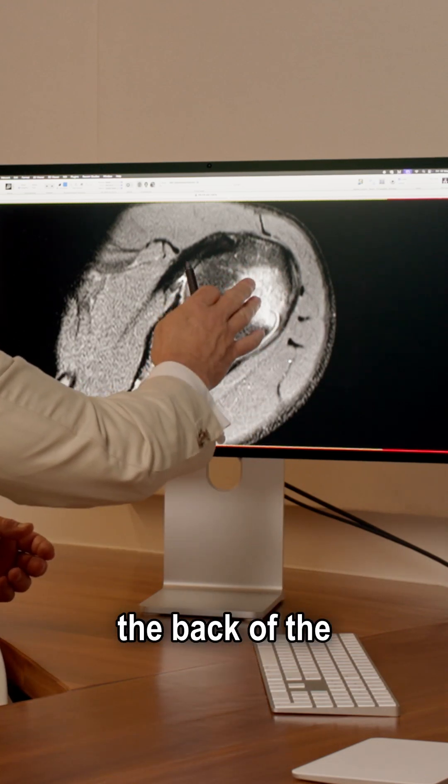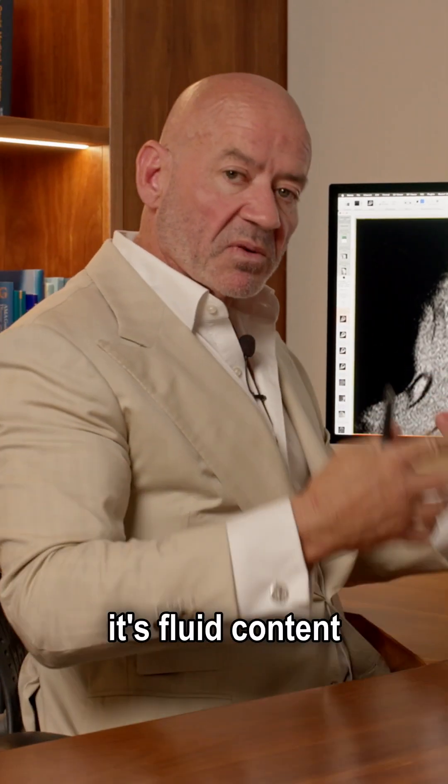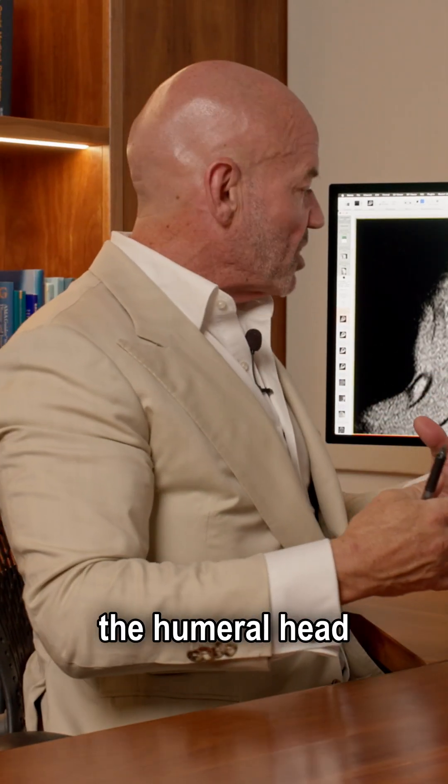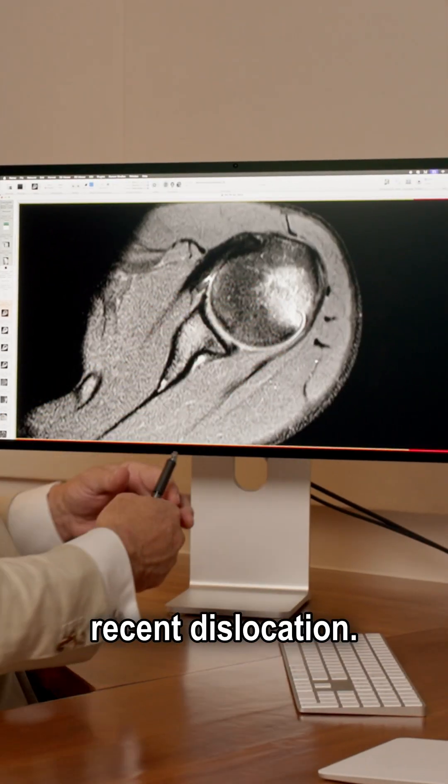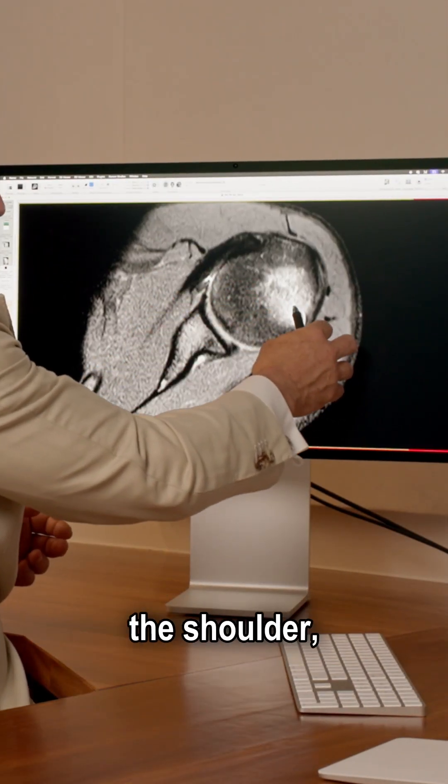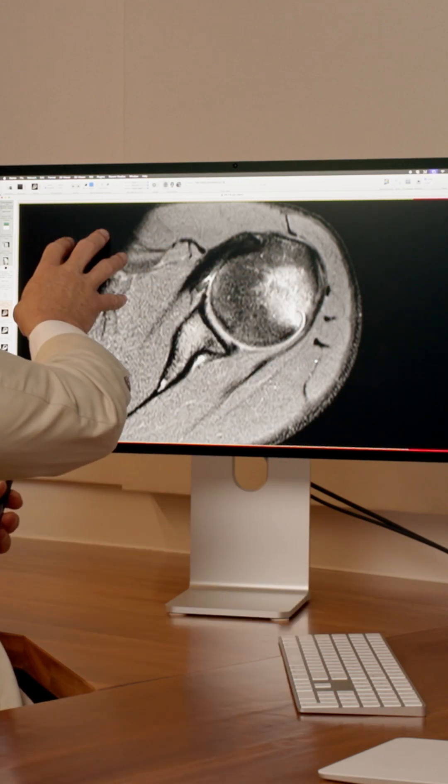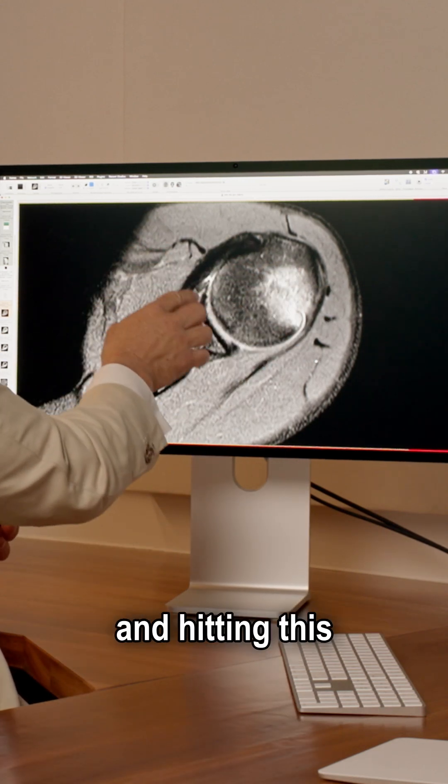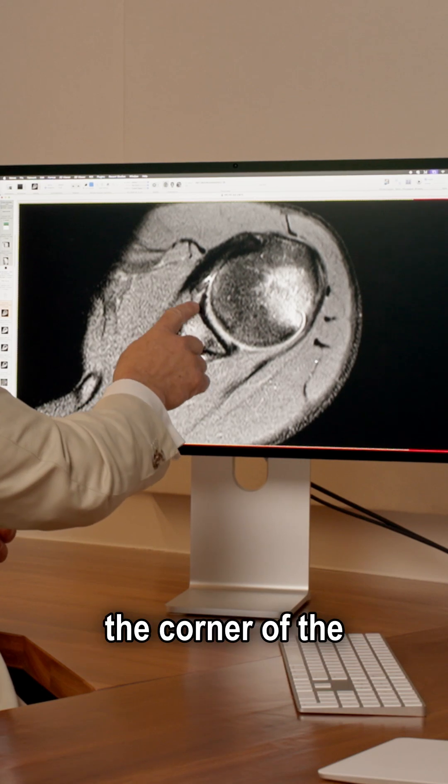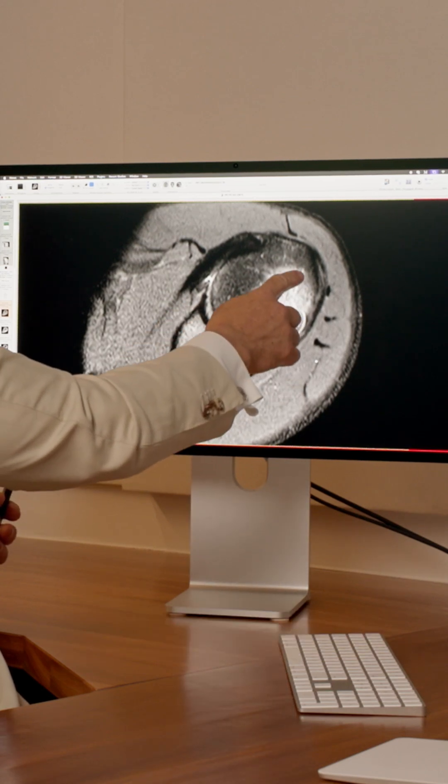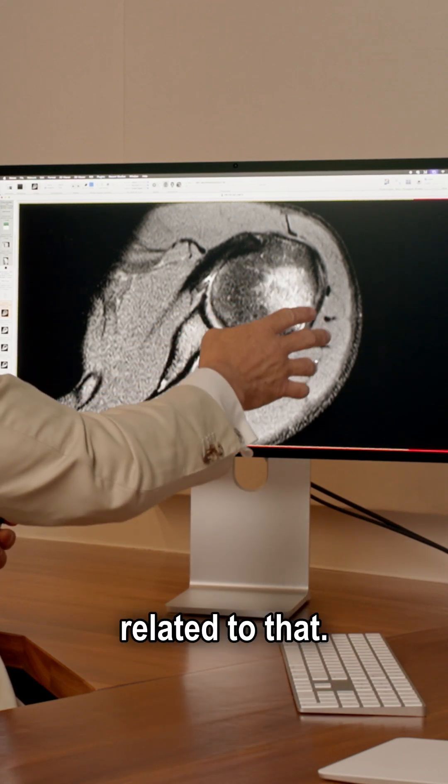This bright area in the back of the humeral head is bone bruising. It's fluid content in the back of the humeral head related to the recent dislocation, and he's got a dent here in the back of the shoulder, an indentation there. That's from the shoulder coming out, dislocating out here and then coming back and hitting this corner of bone here, the corner of the socket which dents here, and then you get bone bruising related to that.